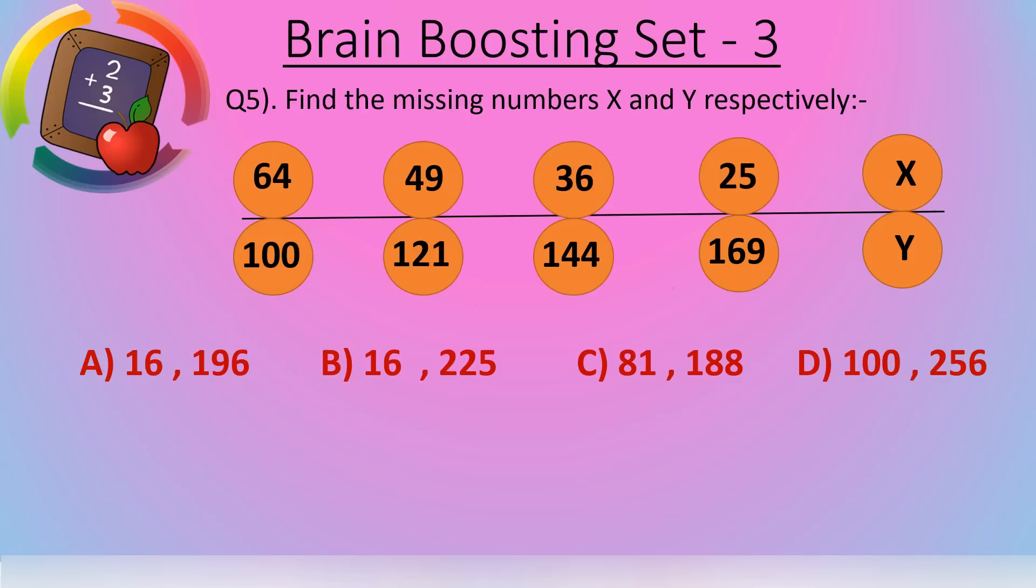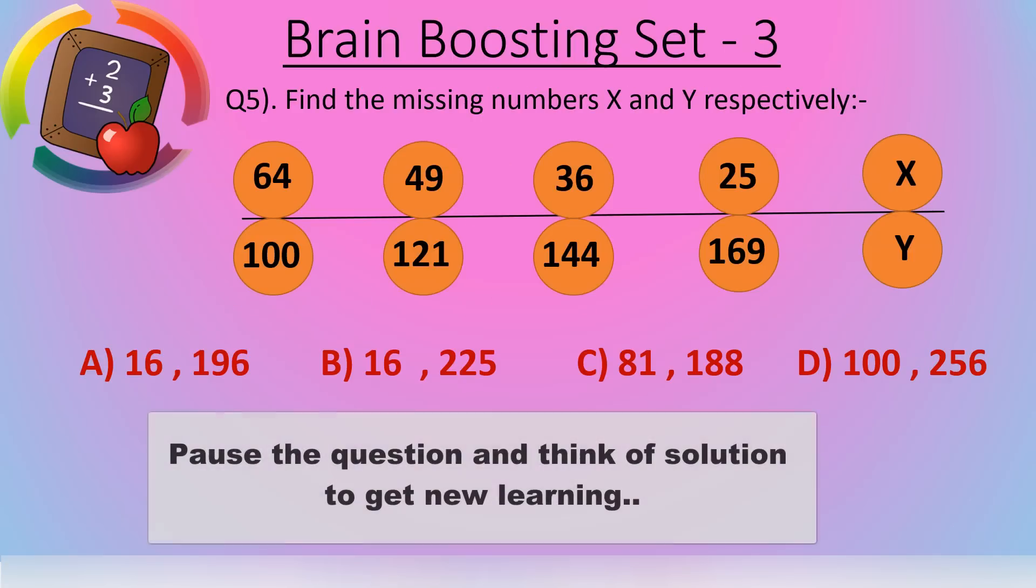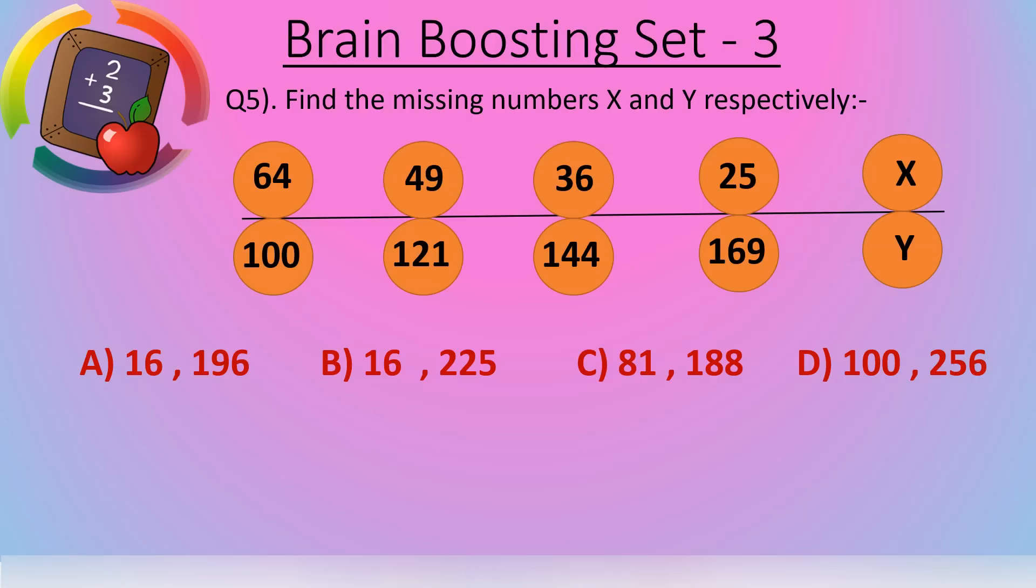Now question number 5. Question number 5 is find the missing numbers X and Y respectively. So here 64, 49, 36, 25 and X. Here 100, 121, 144, 169 and Y. So 64, if we multiply 8 into 8 we get 64. Now you tell me, how we get 36?